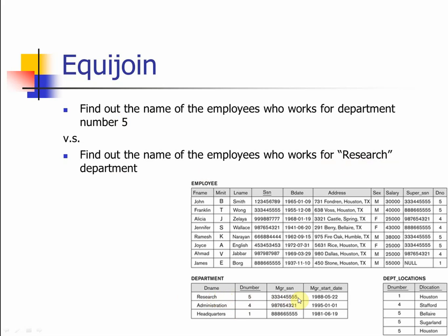This is the same idea: if I ask for the manager's social security number of the research department, two tables might be sufficient. But if I ask for the manager's name, a social security number alone is not good enough — I need a name. That's why you need to join the tables to find which name corresponds to that SSN. You really need to understand the difference: one query requires a join, the other can be answered with a single table.